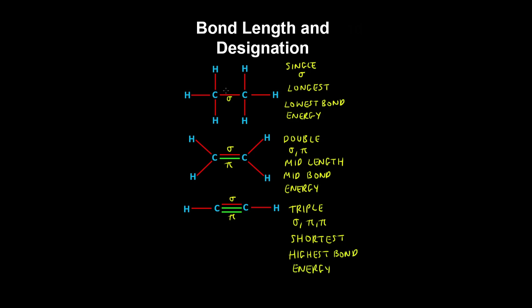Note that in these covalent bonds, the bond length is influenced by both the size of the atom's core and the bond order — so single, double, or triple.